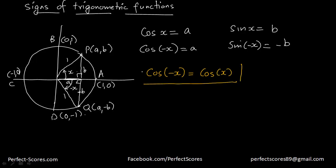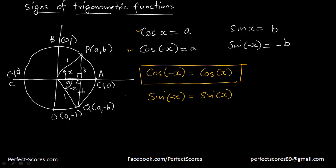We can clearly see that cosine of x and cosine of negative x are both equal to a. And the value of sine of negative x is equal to negative sine of x. These are very important expressions.